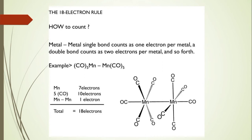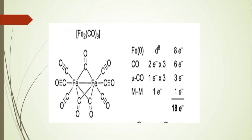Next we take the binuclear metal carbonyl Mn₂(CO)₁₀. Manganese has 7 electrons in its outer shell, and 5 CO groups contribute electrons to one metal atom. In this metal carbonyl, there is one metal-metal bond, which contributes 1 electron to each metal atom. Totally we get 18 electrons for one metal center, so it is a stable metal carbonyl.